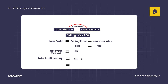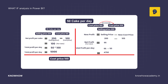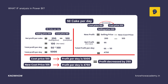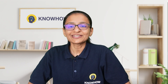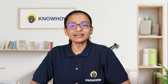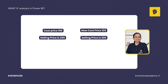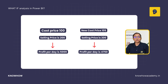When your cost price is Rs. 100, your profit per day is Rs. 5,000. But when your new cost price is Rs. 105, your profit per day is Rs. 4,750 — a decrease of Rs. 250. This is the what-if analysis: what if the cost price is increased while we keep the selling price the same? The result is that we get less profit compared to the old cost price.